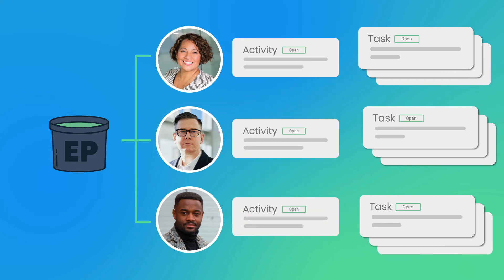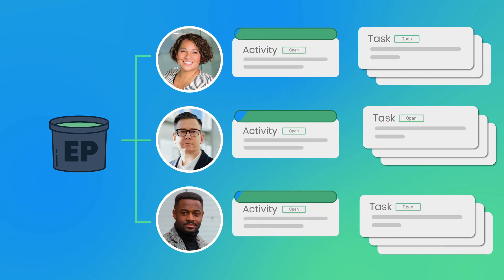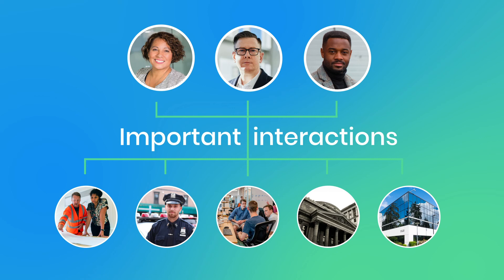First, she'll set up an activity in Borealis to contact all the businesses. The activity will automatically create a template task that explains how to contact each organization and what information to provide. As tasks are completed and closed, Jessica can easily evaluate the situation to make sure project deadlines are met. Since the system generates the tasks that need to be done, Jessica's team can focus on the quality of their interactions instead of scrambling to find out what to do next.